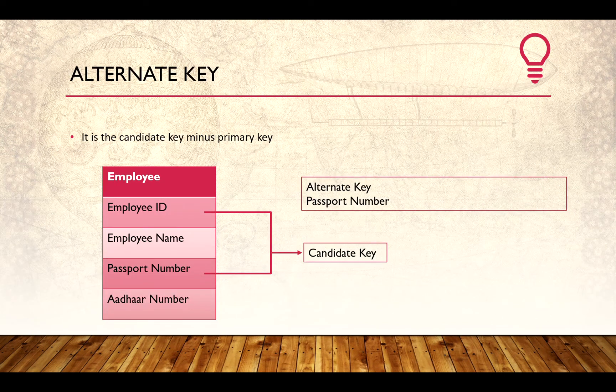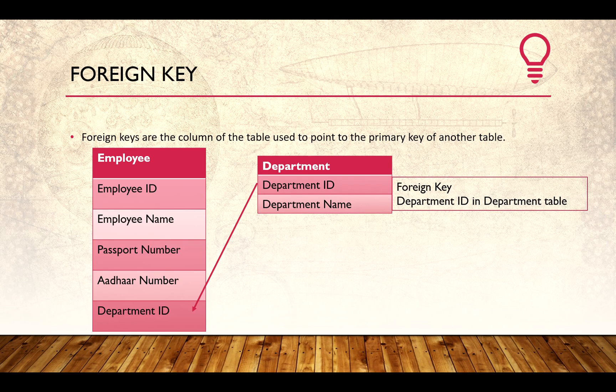Moving on to alternate key: it is nothing but the candidate key minus the primary key. For example, if our candidate keys are employee ID and passport number, and we already made employee ID the primary key, then the alternate key would be passport number.